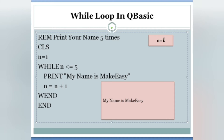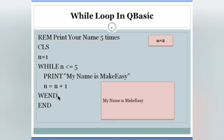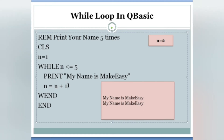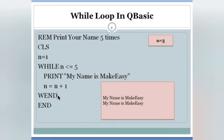Next, N equals to N plus one. N is already one, so one plus one equals two. Now N is two. WEND — that means 'while end', the end of the while loop. But before ending, it goes back to the while condition and checks again. N is two: is two less than or equals to five? Condition true. So it prints again — printed twice. N equals to N plus one: two plus one is three.